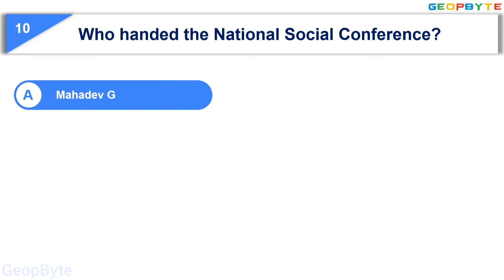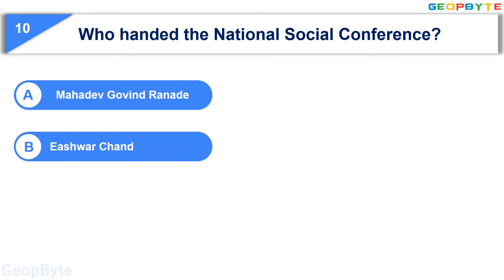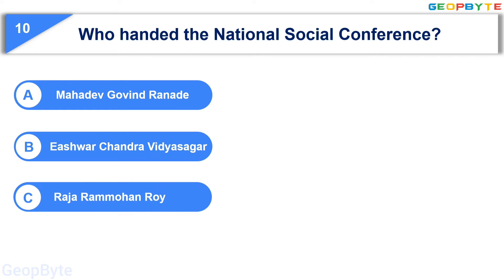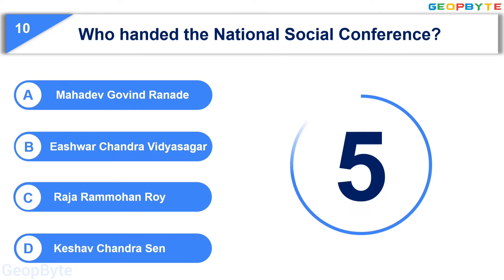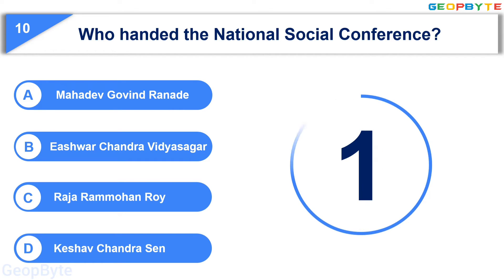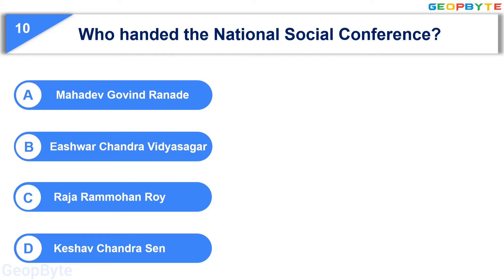Moving to the tenth question: who founded the National Social Conference? Option A: Mahadev Govind Ranade, Option B: Ishwar Chandra Vidyasagar, Option C: Rajaram Mohan Roy, Option D: Keshav Chandrasen. Your time starts now. Your time is up and the correct answer is Option A: Mahadev Govind Ranade.